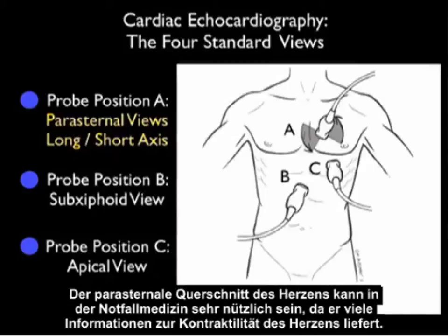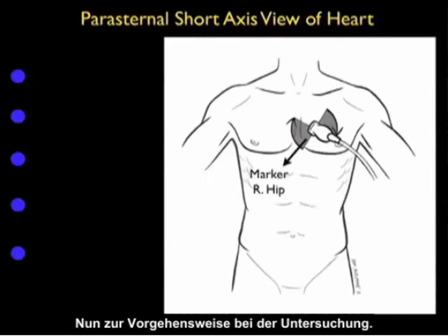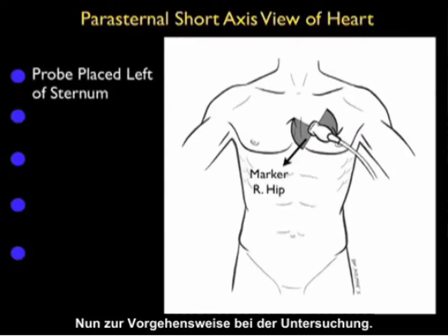The parasternal short axis view of the heart can be very helpful in emergency care, as it gives a great deal of information about the contractility of our patient's heart. So let's look now further into how to perform this examination.